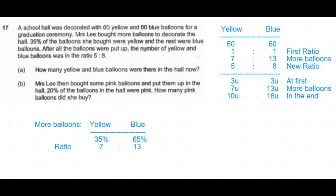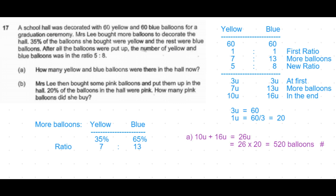Once we get them in terms of units, the question is simplified. The initial number of balloons was 60, so 3 units equals 60, meaning 1 unit equals 60 divided by 3, which is 20 balloons. For the first part of the question — how many yellow and blue balloons were there in the hall — the total is 10 units plus 16 units, which is 26 units, equal to 520 balloons.